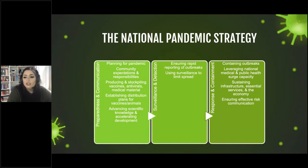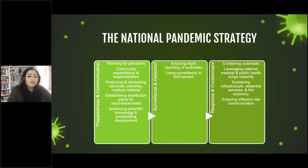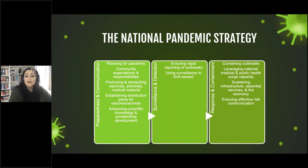The national pandemic strategy is comprised of three pillars. The first pillar is preparedness and communication — the governing body sets community expectations and assigns responsibilities, produces and stockpiles vaccines, antivirals, or treatments, establishes distribution plans for these treatments, and continues to advance scientific knowledge. The second pillar is surveillance and detection, which focuses on ensuring rapid reporting of outbreaks to both public health entities and citizens, and using surveillance to limit the spread of a virus. The third pillar is response and containment, focusing on containing outbreaks, leveraging national medical and public health surge capacity, sustaining infrastructure, essential services, and the economy, and ensuring effective consistent risk communication.